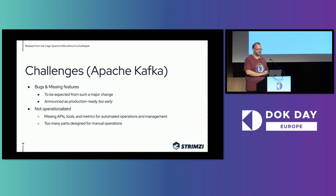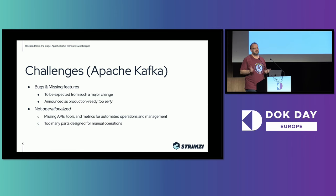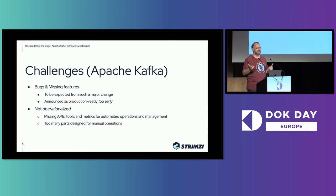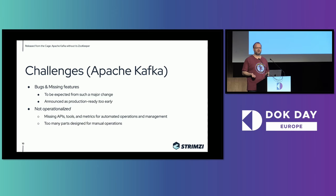That was the intro to how KRaft works and how ZooKeeper-less Kafka will look. Now I wanted to talk about some challenges we faced, which might also be useful to people interested in other projects and tools. Some challenges were related to Apache Kafka itself — as I said, this has been going on for several years, so there have been plenty of bugs and plenty of missing features added over time. One major issue was that a lot of the initial work was not operationalized: there were no APIs to manage things, no metrics to observe the system state. When you work on something like Strimzi which is all about automating things, instructions like 'read the log and find some line' are not reliable or automatable.